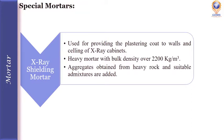Next is X-ray shielding mortar. This type of mortar is used for providing the plastering coat to walls and ceilings of X-ray cabinets. It is a heavy mortar with bulk density over 2200 kg per cubic meter. The aggregates used are obtained from heavy rocks, and suitable admixtures are added to enhance the protective property of such mortar.